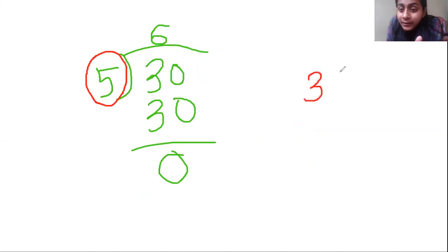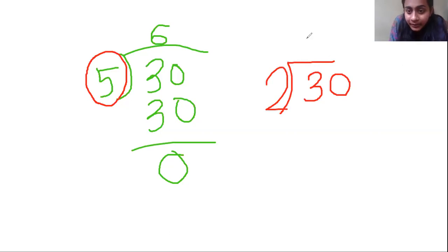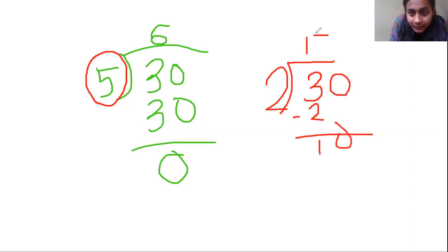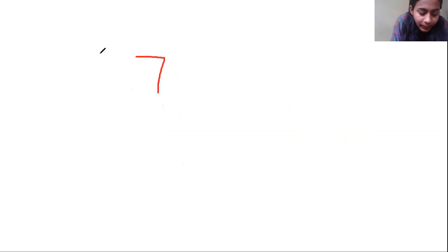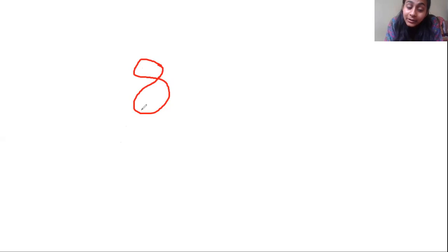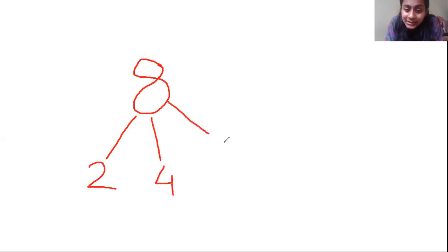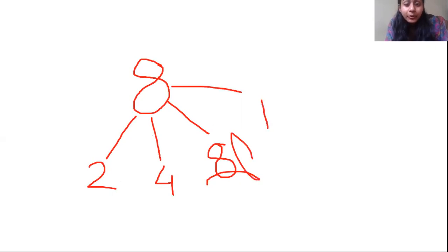Similarly, 30 can have more factors. I can divide 30 by 2 and get 15. If someone asks you to find the factors of 8, think about which numbers can divide 8 — or in which tables does 8 appear? It appears in the 2 times table; we can divide 8 by 2, by 4, by 8, and also by 1. Now I will teach you a new method to find factors — we call it the Rainbow Method.